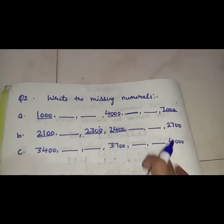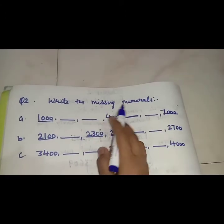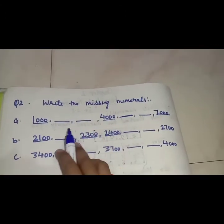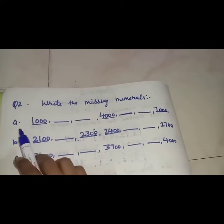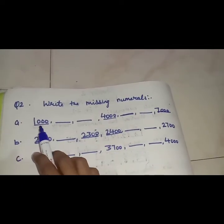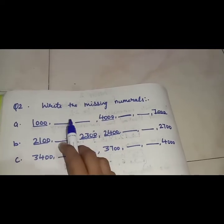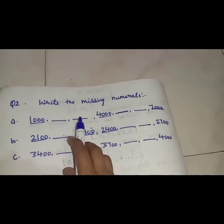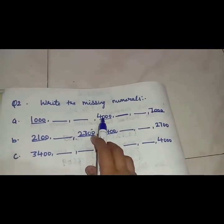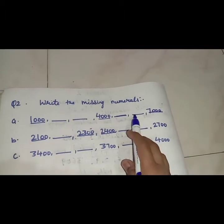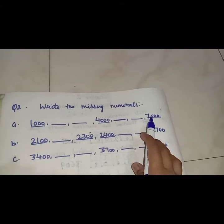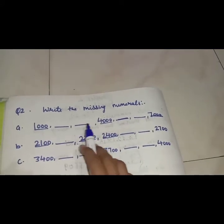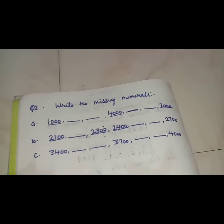The next question is: write the missing numerals. You have to write the missing numbers for this question. Here is your first series. It has written 1,000, then two blanks, then 4,000, then two blanks, and in the end 7,000. So how do we do this question? We will find out the missing numerals and write them in.